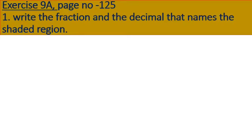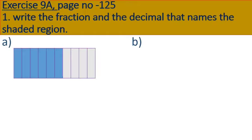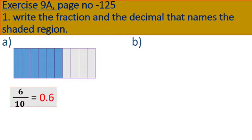Open your mathematics textbook, page number 125, exercise 9A. First main: write the fraction and the decimal that names the shaded region. Here they have given some pictures and we have to find the fraction and decimal names. First question A: look at the picture, out of 10 parts, 6 parts are shaded. Write in fraction: 6 by 10. Convert into decimal: 0.6.